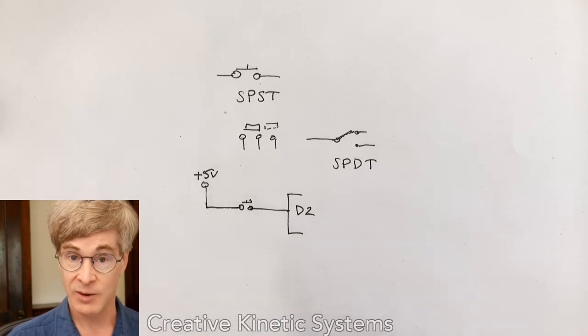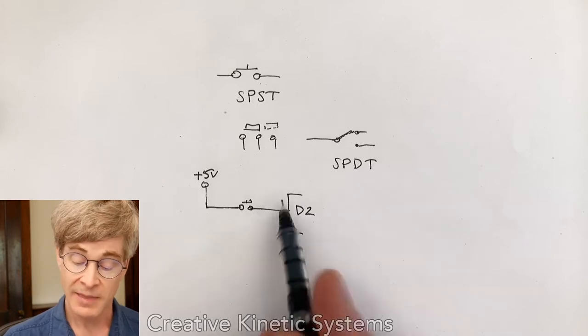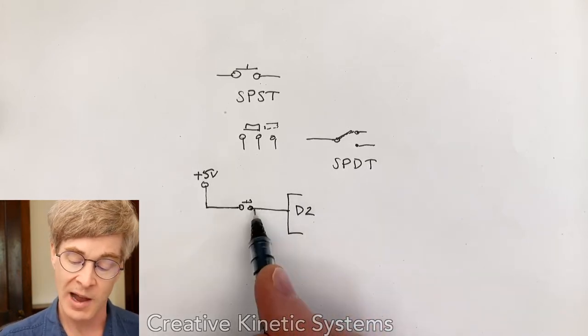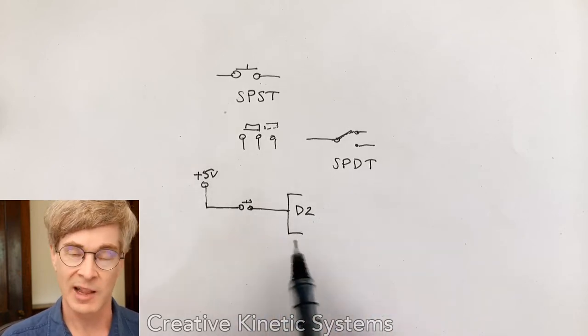Let's think about the second state, which is I open the switch and allow it to disconnect. Then this problem occurs where the D2 line is no longer connected. We call it floating. It's not connected to any other circuit element.